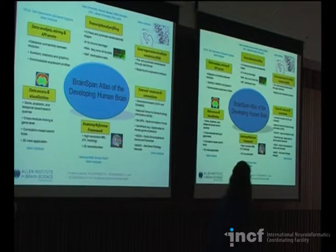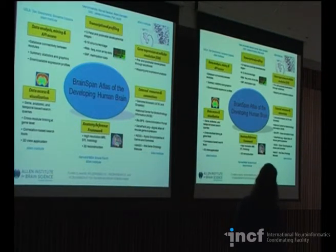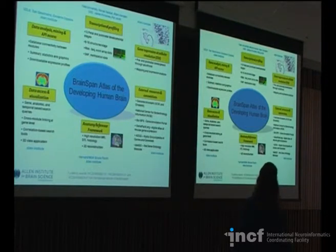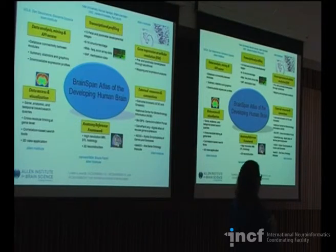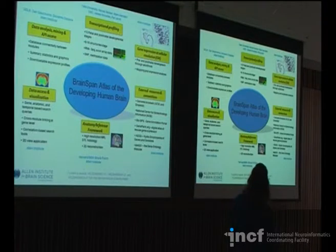The BrainSpan Atlas of the Developing Human Brain is the work of multiple groups. We have at USC and Yale a group that does transcriptional profiling, Harvard working on some MRI stuff. We contribute ISH imagery, LCM microarray data points, an anatomy reference framework, and the data visualization.